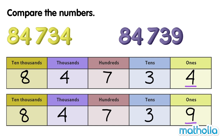4 ones is smaller than 9 ones. So, 84,734 is smaller than 84,739. We can also say that 84,739 is greater than 84,734.